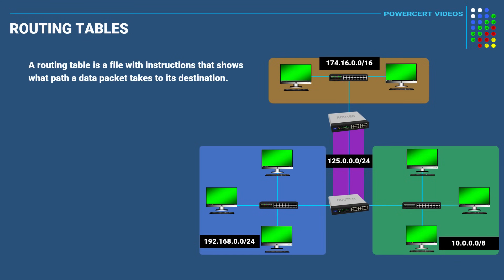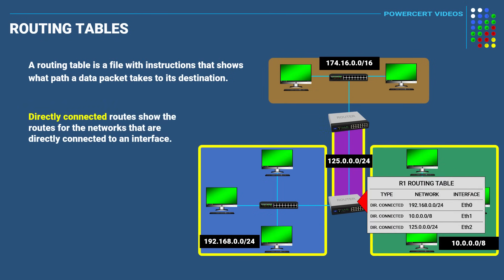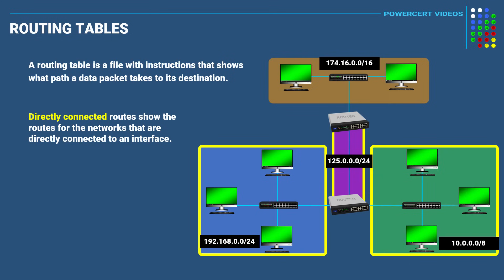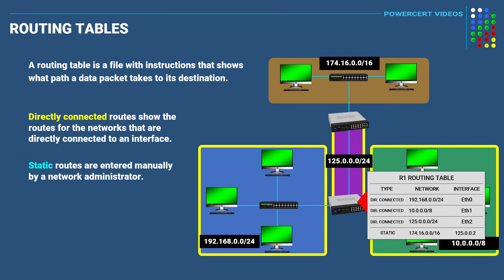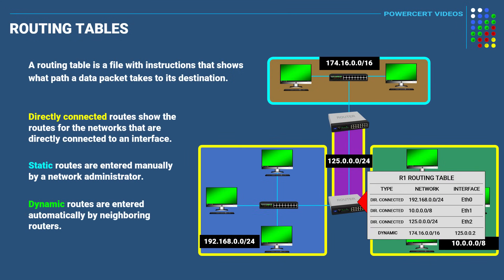As a review: a routing table is a file with instructions that shows what path a data packet takes to its destination, and the router refers to this table to find out where to forward the data packet. Routing tables are populated in three ways. Directly connected routes show the routes for networks directly connected to an interface, and are automatically created as soon as the router's interfaces are configured with an IP address and subnet mask. Static routes are entered manually by a network administrator and are necessary to access networks that are not directly connected to a router's interface. Dynamic routes are similar to static routes but are entered automatically by neighboring routers, which talk to each other using routing protocols and exchange their routing tables.